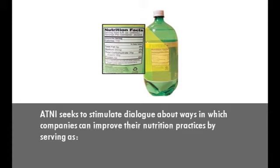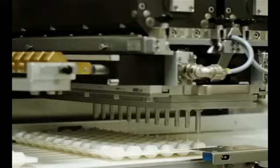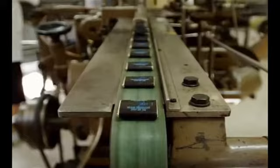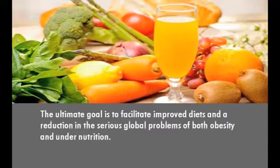ATNI seeks to stimulate dialogue about ways in which companies can improve their nutrition practices by serving as a means for companies to benchmark their approach to nutrition against their peers and identify areas for improvement, and as an independent source of information for stakeholders interested in monitoring or engaging with the food and beverage industry on nutrition issues. Through these paths of influence, ATNI aims to encourage companies to increase consumer access to nutritious products and responsibly exercise their influence on consumer choice and behavior. The ultimate goal is to facilitate improved diets and a reduction in the serious global problems of both obesity and undernutrition.